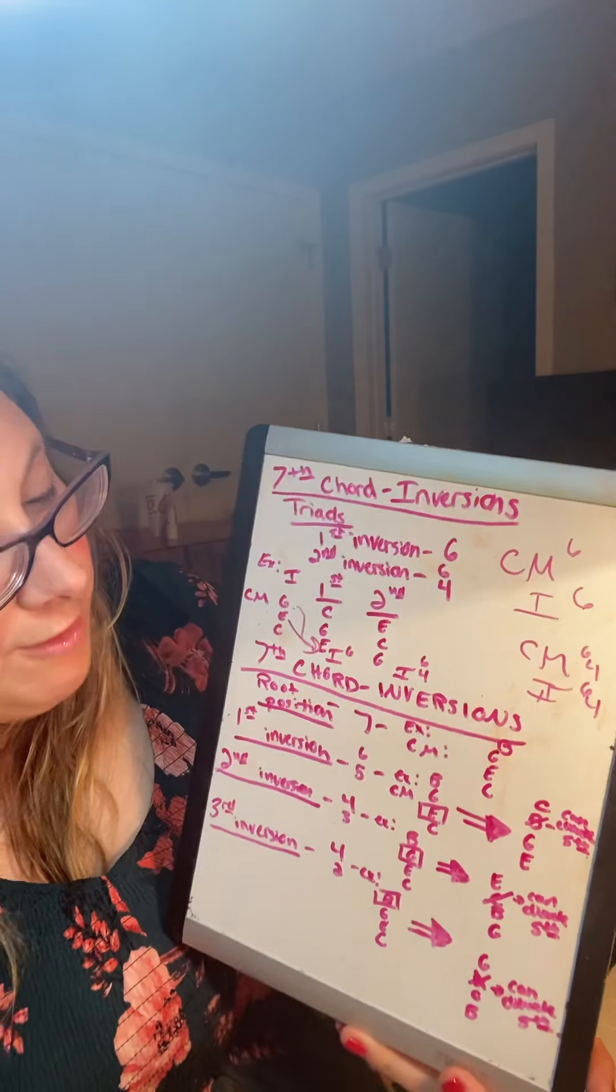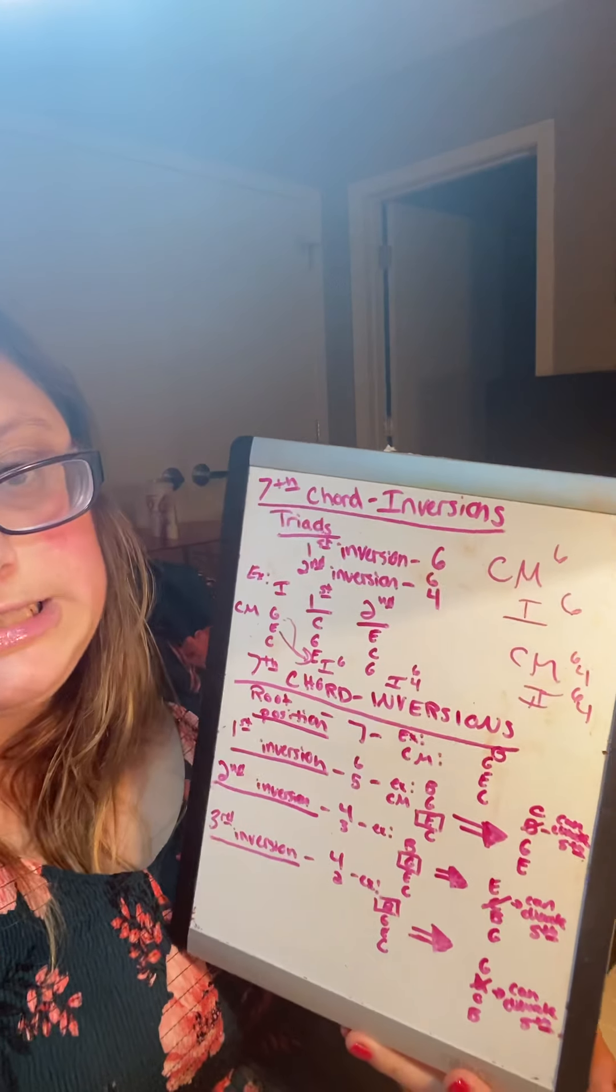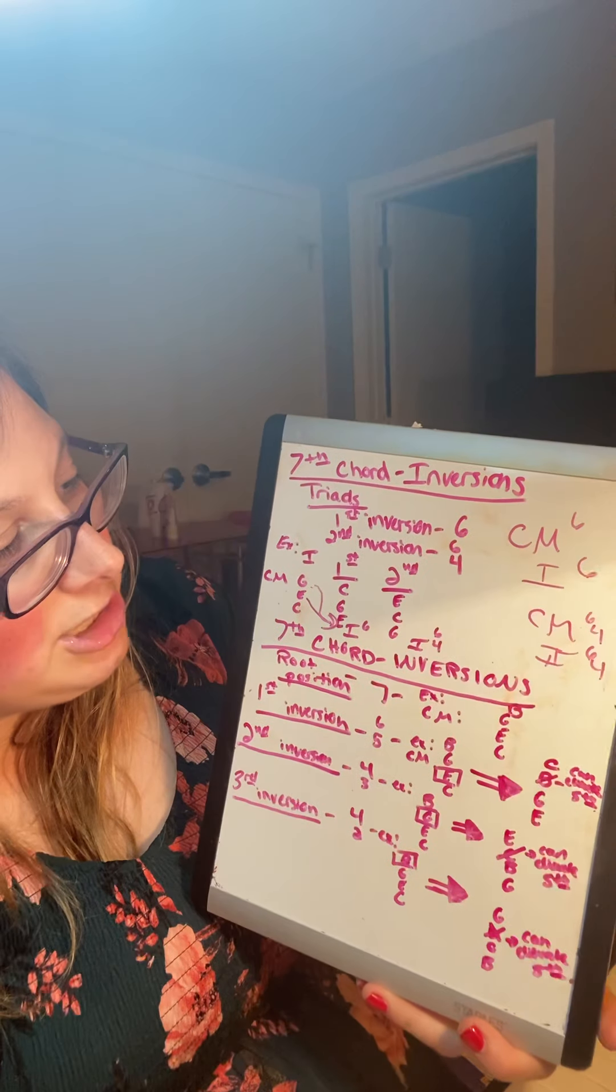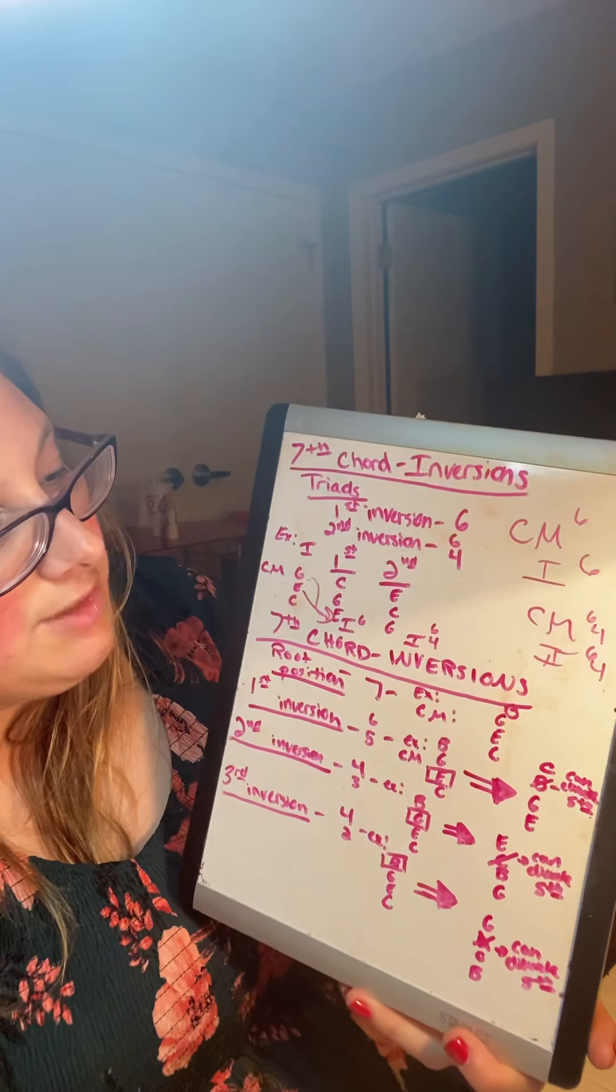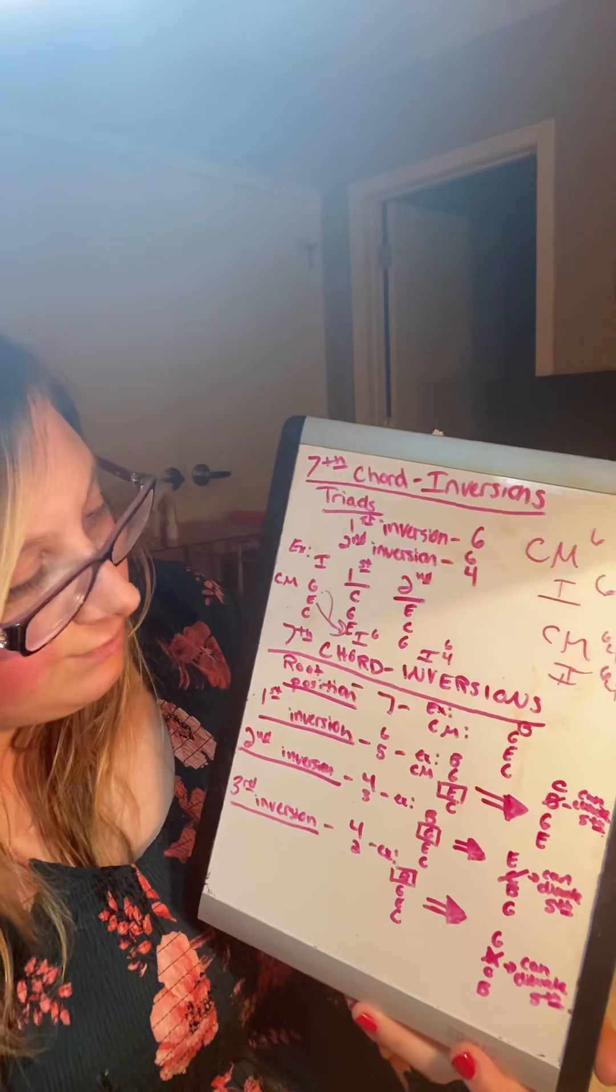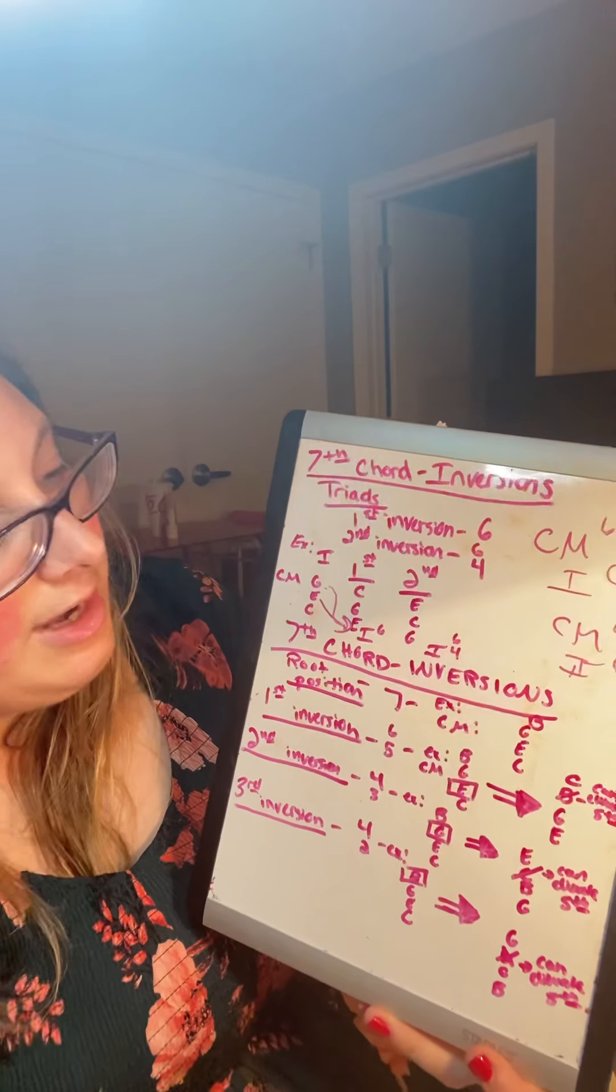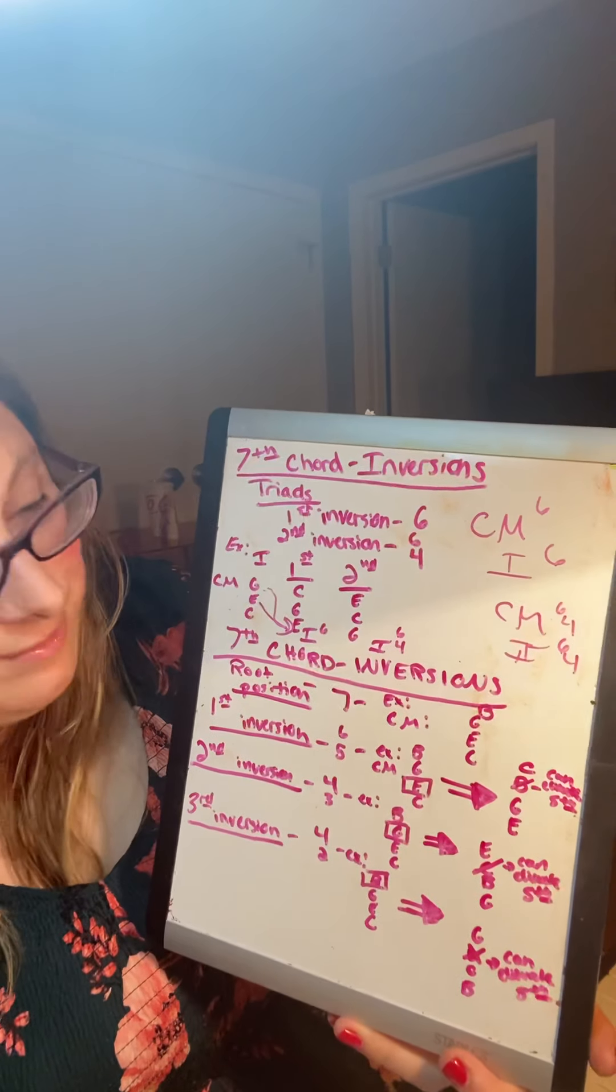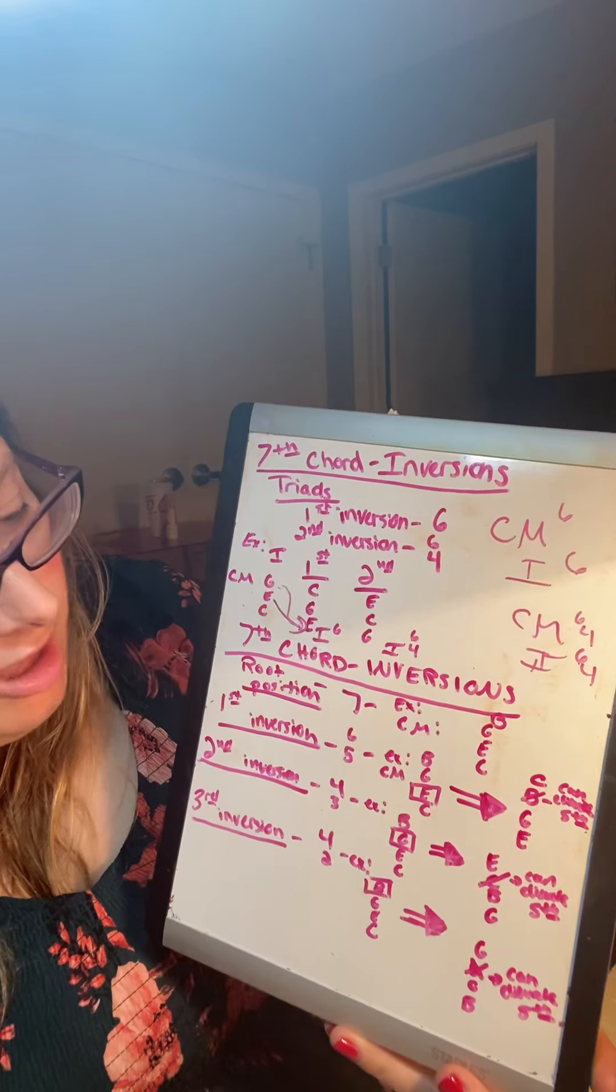So a little overview that we're just doing triads, not seventh chords. C major would be C, E, G in root position. In first inversion, you would start with E and go to G and C. And then in second inversion, you would move it to G on bottom, then C and E.